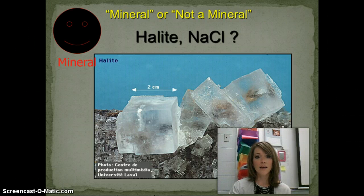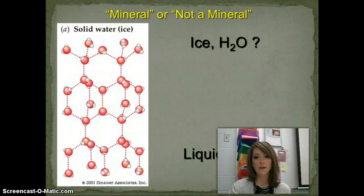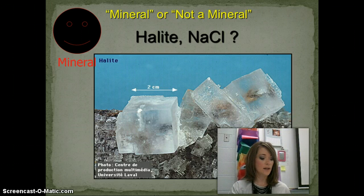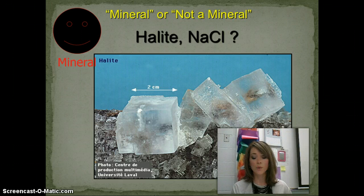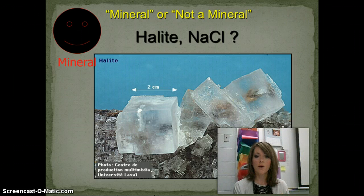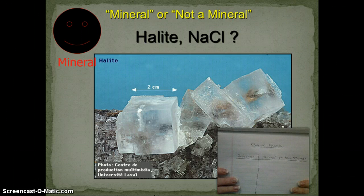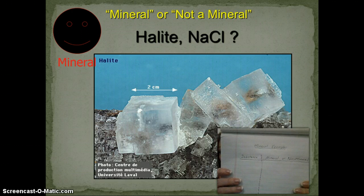Now we're going to practice identifying minerals. At the bottom of your page, make another T-chart — our mineral examples chart. On the left-hand side, put the substance; on the right-hand side, put whether it's a mineral or non-mineral, and a brief explanation about which characteristic it doesn't meet if it's a non-mineral.